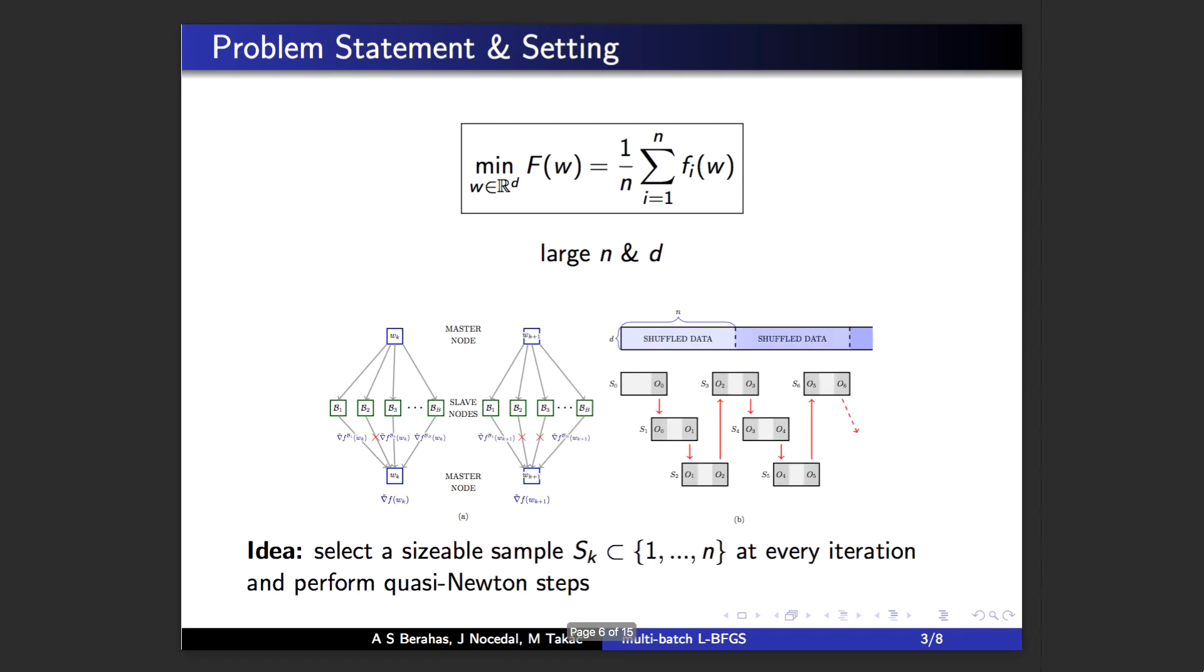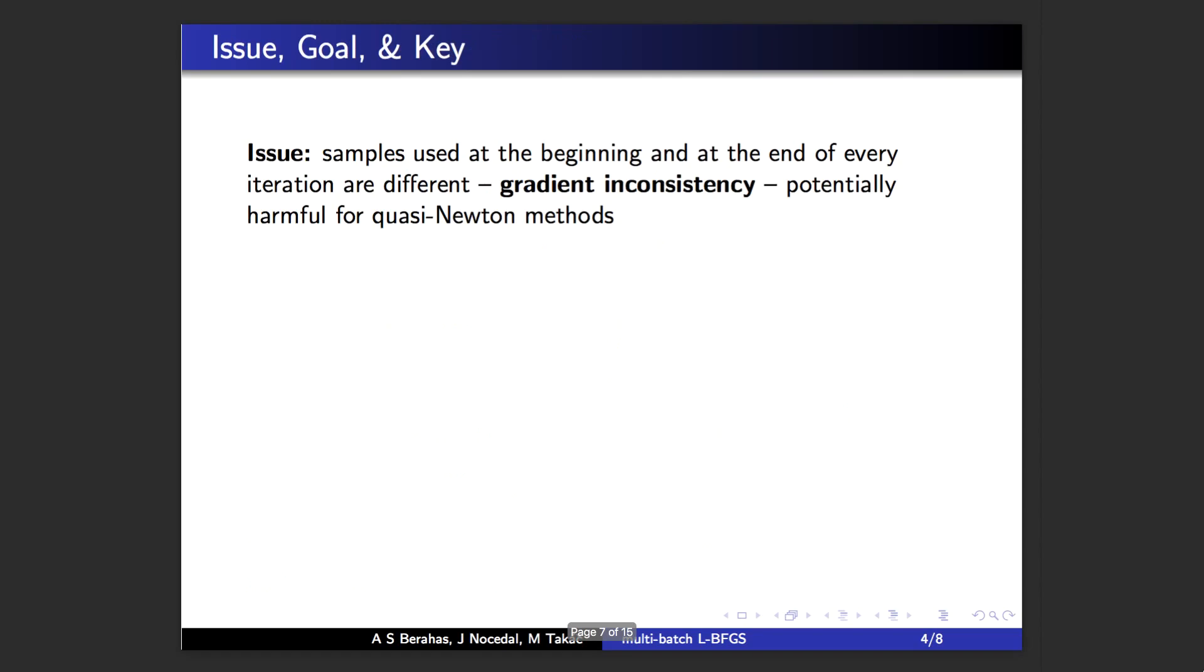The idea of our proposed method is to use a sizable sample at every iteration and perform quasi-Newton steps. The two settings described above are similar in certain ways. An issue that arises in both settings is the fact that the samples used at the beginning and at the end of every iteration may differ. In the distributed setting, this is a result of the faults that may arise, and in the multi-batch setting, different samples arise by default.